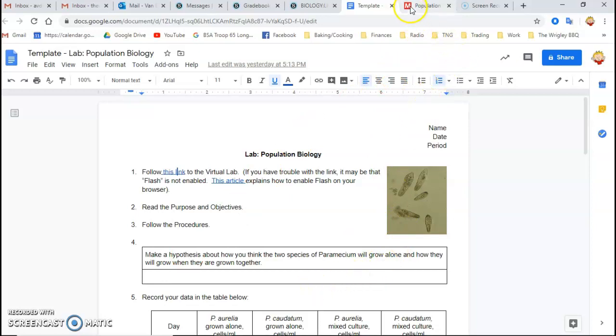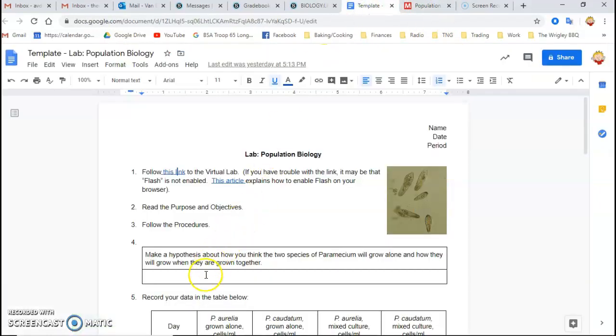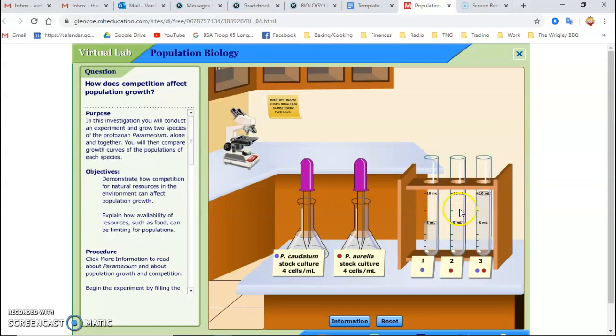And then in this third one, you're growing them together. And so there is competition. And then for that one, in your hypothesis box here, how do you think that's going to, what's going to happen? Are they going to grow uncontrollably? Or are they going to level off? Is it going to be as high? Is their population going to get as big as they would in their individuals?